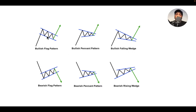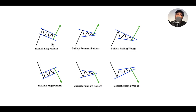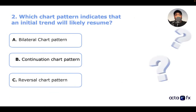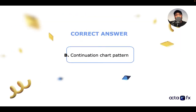Everybody can hear me — great. So the continuation chart pattern indicates that price would likely continue in its initial trend. Examples include the bullish flag, bullish pennant, and bullish falling wedge. For bearish patterns we have the bearish flag, bearish pennant, and bearish rising wedge. The answer for number two is continuation chart pattern.